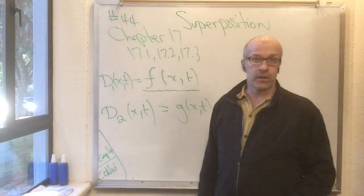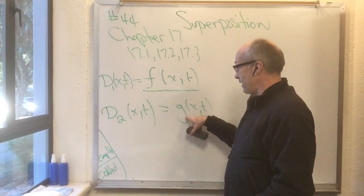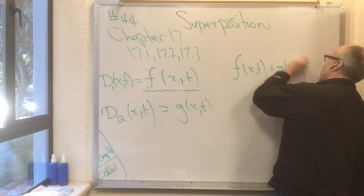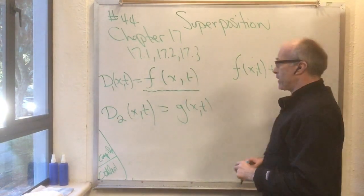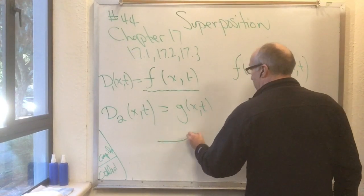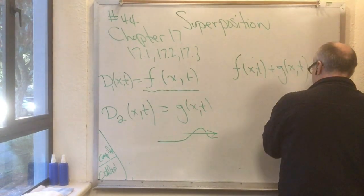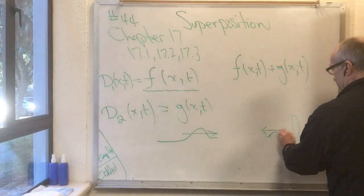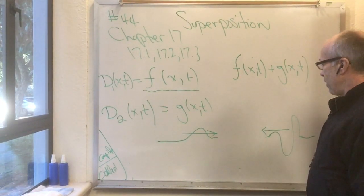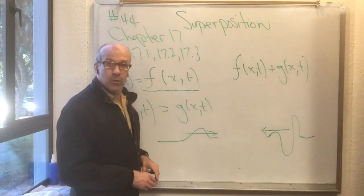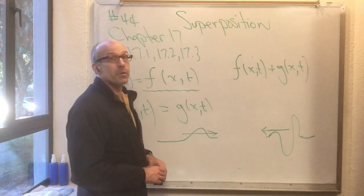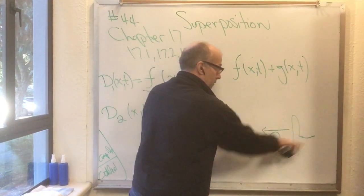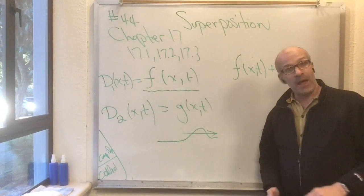The principle of superposition says that if d1 is a solution of the wave equation and d2 is a solution, then their sum is also a solution. One interesting consequence is that if you have a wave — some bump moving to the right — and another wave, some other bump moving to the left, these two pass right through each other without affecting each other.